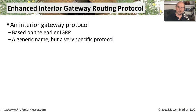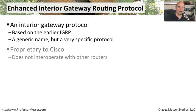EIGRP stands for Enhanced Interior Gateway Routing Protocol. It is an interior gateway protocol, which means we would only expect to see this type of routing protocol used in a single autonomous system. This is one that is based on an earlier protocol called IGRP — this is the enhanced version of that. It is a protocol that works very specifically, and we'll talk a little bit about that.